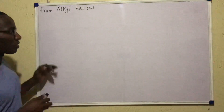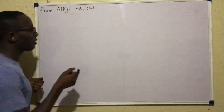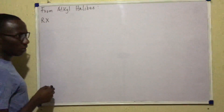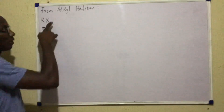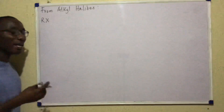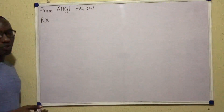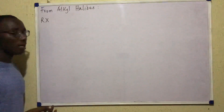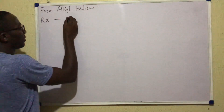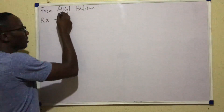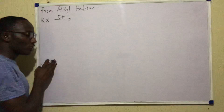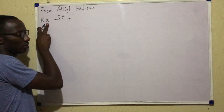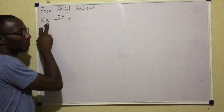When alcohols are to be prepared from alkyl halides, what are alkyl halides? They are compounds of formula RX. What you need to do to the alkyl halide is hydrolyze it. So the reaction involves hydrolysis of an alkyl halide, and when an alkyl halide undergoes hydrolysis, an OH group is introduced to knock off the halogen, the X of your alkyl halide.